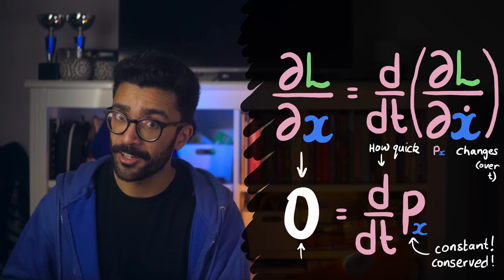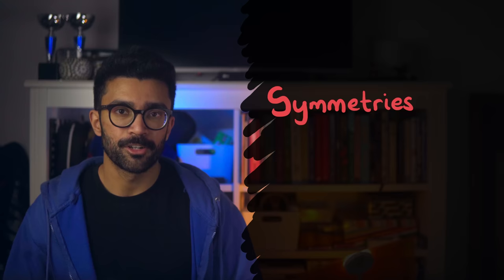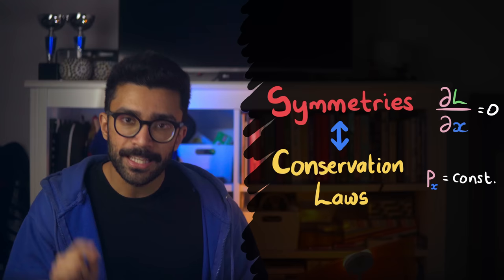So this is one way to understand the link between a symmetry, mathematically shown by the independence of the Lagrangian on one of our coordinates, and the conservation of momentum in that coordinate direction. Once again, this is a massively oversimplified description that does not account for all of the mathematical possibilities of the Euler-Lagrange equations, but the real description is just a more complicated version of this. And the way that we've understood the relationship between symmetry and conservation laws is the most convenient way, in my opinion, to visualize it, without having to do some complicated maths.